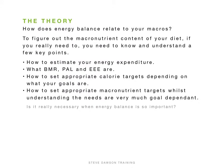Today we're going to cover macronutrient theory — what macros are all about and how energy balance relates to macros. To figure out the macronutrient content of your diet you need to understand a few key points. Firstly, you need to know how to estimate your energy expenditure. You need to understand what BMR, PAL, and EEE are: BMR is basal metabolic rate, PAL is physical activity levels, and EEE is estimated energy expenditure.